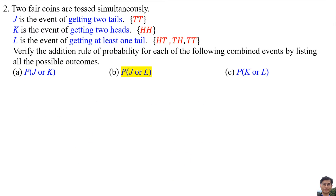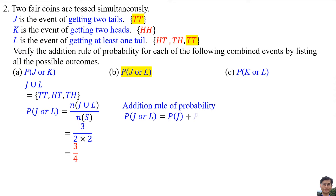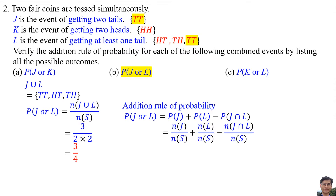For part B, the probability of J or L: The common element for J and L is {TT}. J ∪ L has elements {TT, HT, TH}. So the probability of J or L is 3/4. Using the addition rule, the probability is also 3/4, so the addition rule of probability is verified.